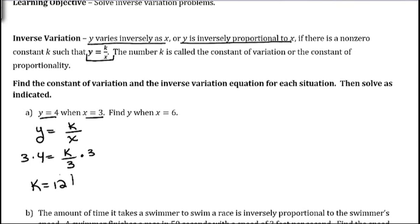So that was the first step was to find this constant. And then the second step, we have y equals 12 divided by x. Now we want to find y when x is equal to 6. So replace the x with 6. We get y is equal to 12 divided by 6, and that gives us 2.